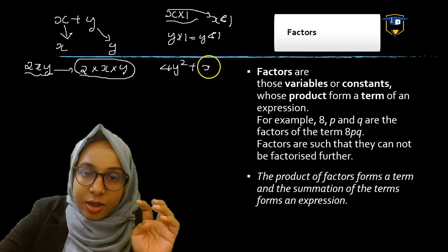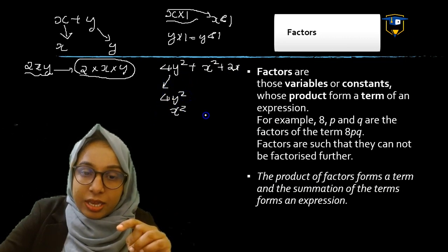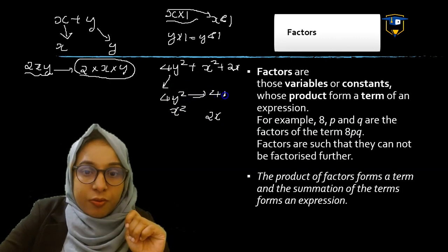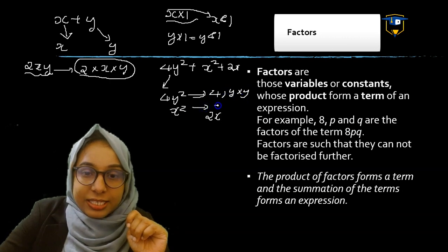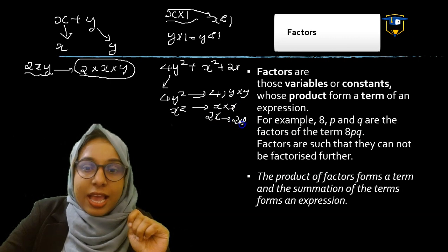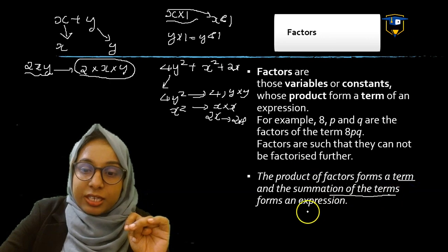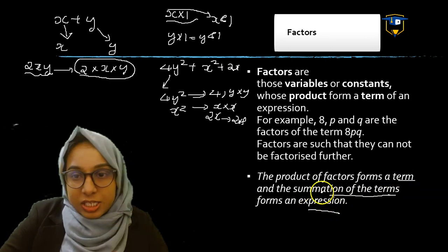Another example: 4y squared plus x squared plus 2x has three terms — 4y squared, x squared, and 2x. The factors of 4y squared are 4, y, and y. The factors of x squared are x and x. The factors of 2x are 2 and x. The product of factors forms a term, and the summation of terms forms an algebraic expression.